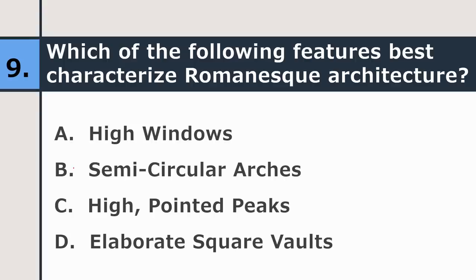Ninth question: which of the following features best characterizes Romanesque architecture — high windows, semi-circular arches, high pointed peaks, or elaborate square vaults? The correct answer is semi-circular arches.